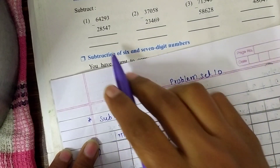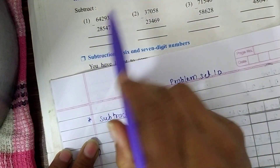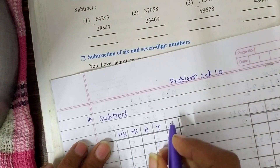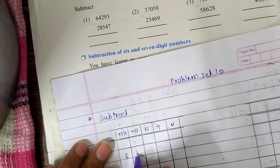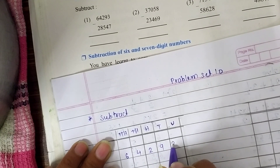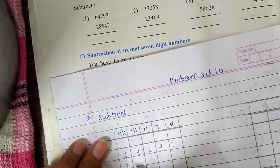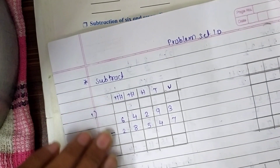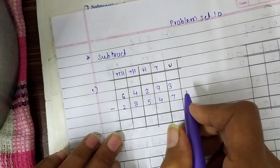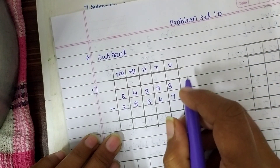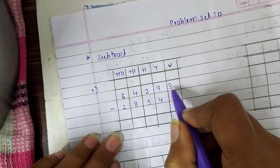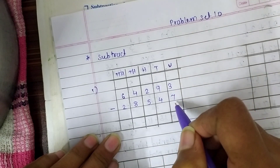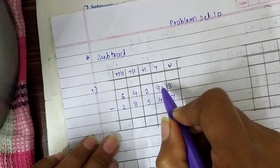These numbers are five-digit numbers so I make only five columns. For subtracting 64,293 minus 28,547, when subtracting we are going to take — here 3 is a smaller number than 7.